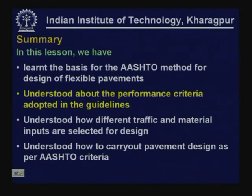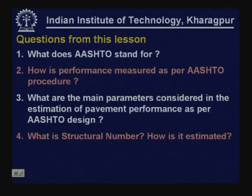To summarize, in this lesson we have learned the basis of AASHTO method for design of flexible pavements, understood the performance criteria adopted in AASHTO guidelines, and understood how different traffic and material inputs are selected for design, including how to carry out pavement designs as per AASHTO criteria. Review questions from this lesson: What does AASHTO stand for? How is performance measured as per AASHTO procedure? What are the main parameters in the estimation of pavement performance? What is structural number and how is it estimated?